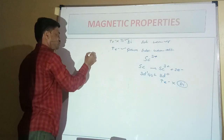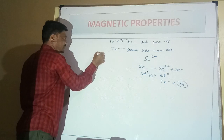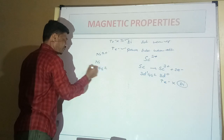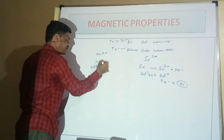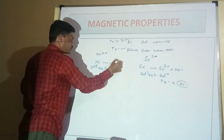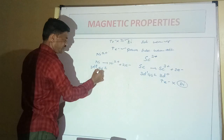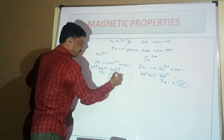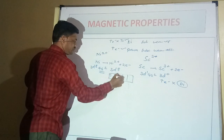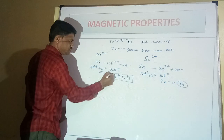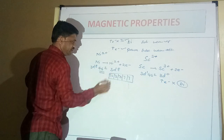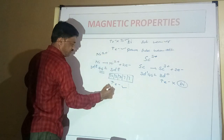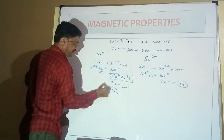For Ni²⁺ (atomic number 28): Ar 4S² 3D⁸. To develop +2 charge, 2 electrons are lost from 4S, leaving 3D⁸. The block diagram for 3D⁸ shows 2 unpaired electrons. So Ni²⁺ is found to be paramagnetic in nature.